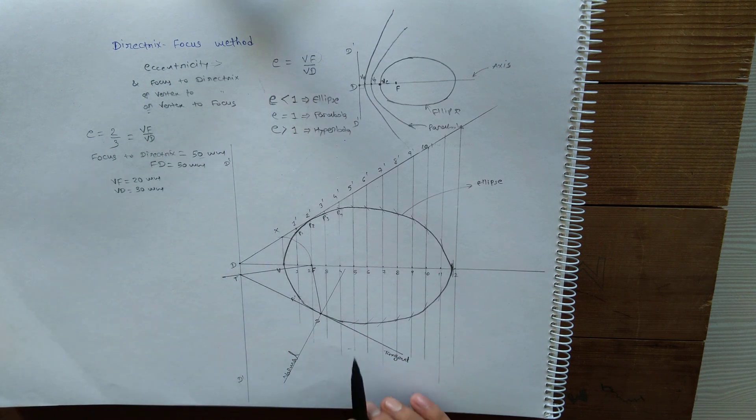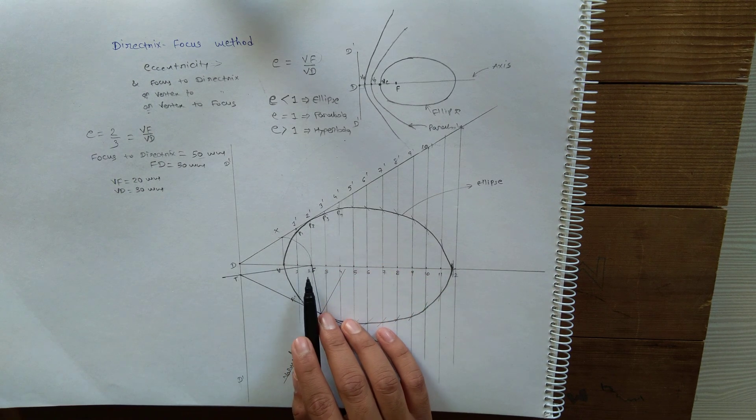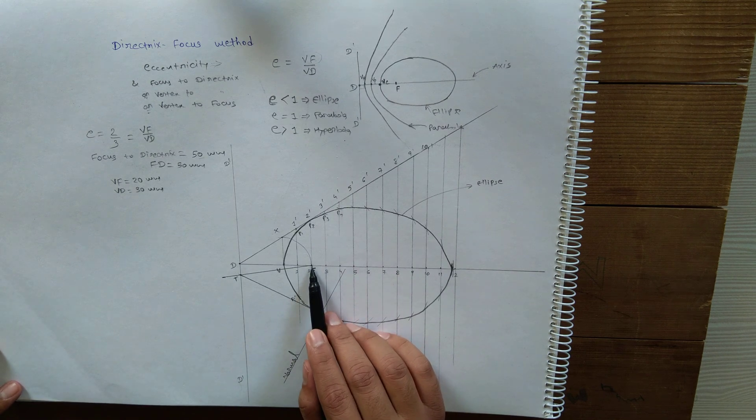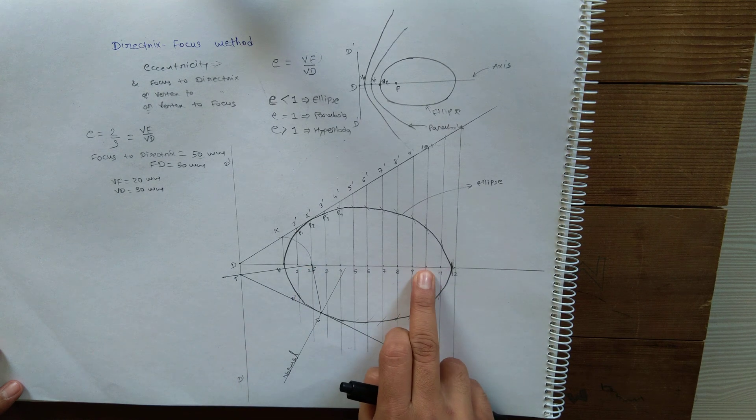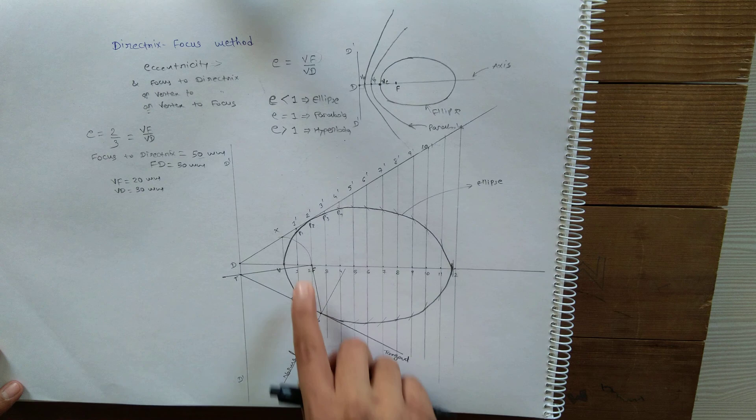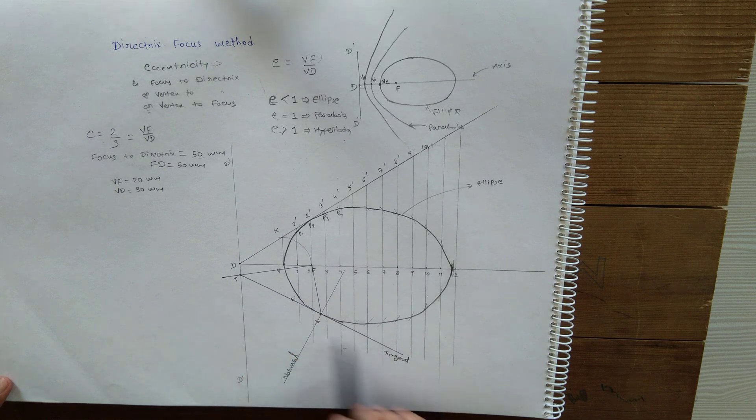So for parabola and hyperbola also you can follow the same method. Otherwise, the alternate way to draw tangent and normal for ellipse, which I explained in an earlier video: you should have two different focus points, one on this side and the other on this side. Join these two foci with point S, and the angle bisector will give you the normal, and then you'll get the tangent. Thank you.